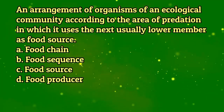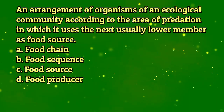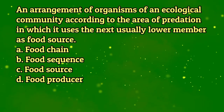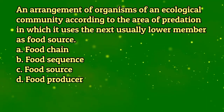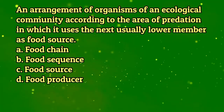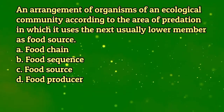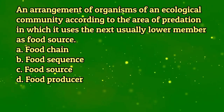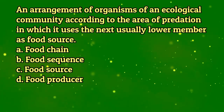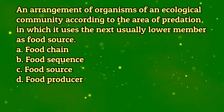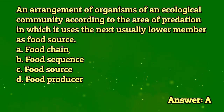An arrangement of organisms of an ecological community according to the area of predation in which it uses the next, usually lower member, as a food source. A. Food chain. B. Food sequence. C. Food source. D. Food producer. The answer is letter A.